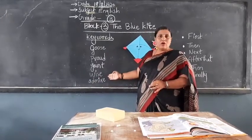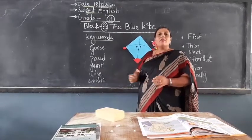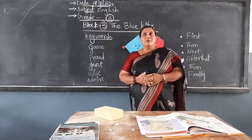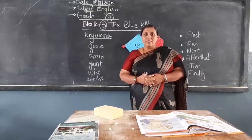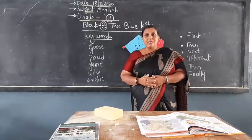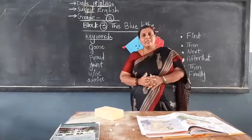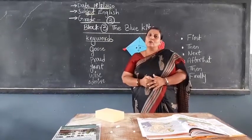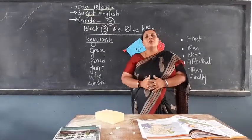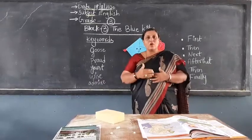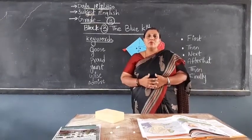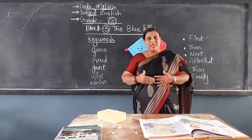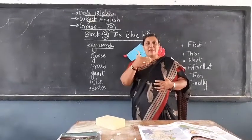Now before starting the lesson let me tell you a small story. Gita is a girl. She eats her dinner at 9 and goes to bed at 9:20. She wakes up and does her brush. She goes to school. She takes a bath. What is this children? Is this in correct order? No. What do you have to do? You should arrange them in sequence.